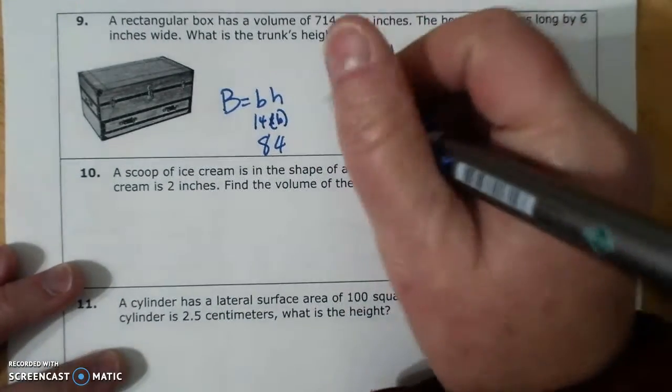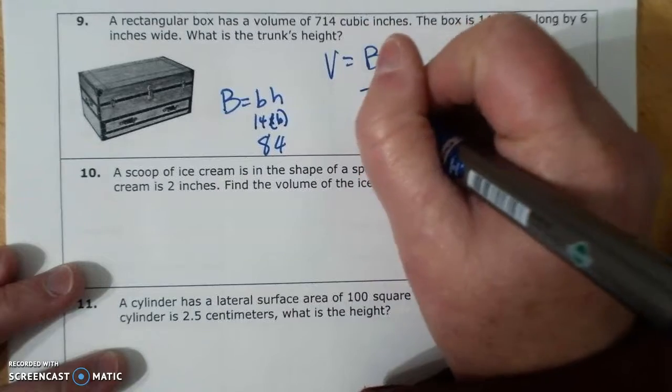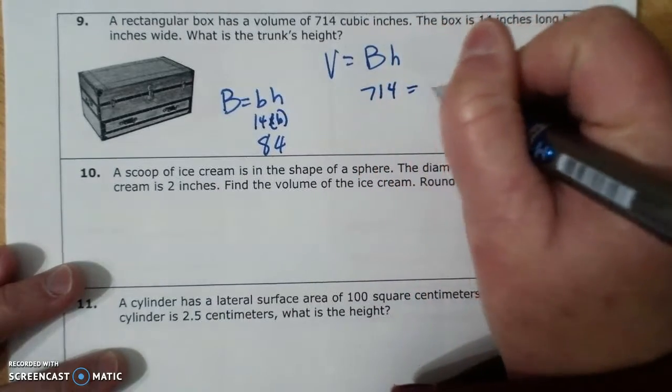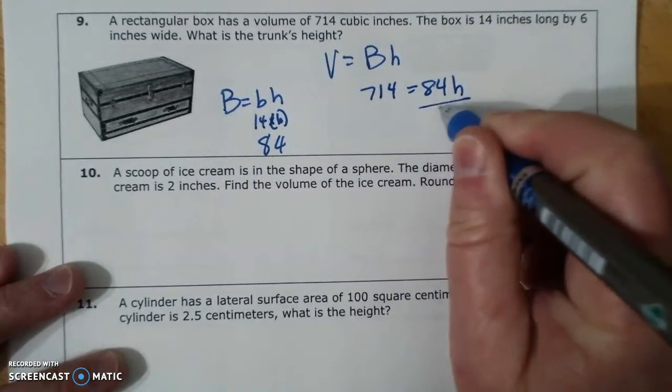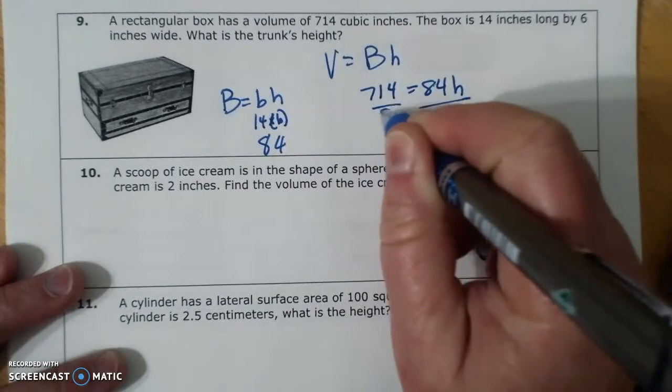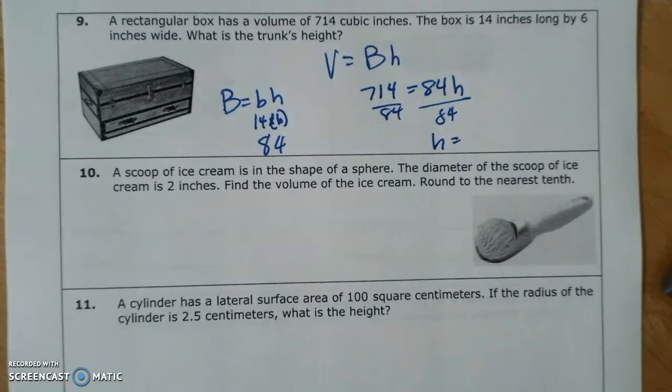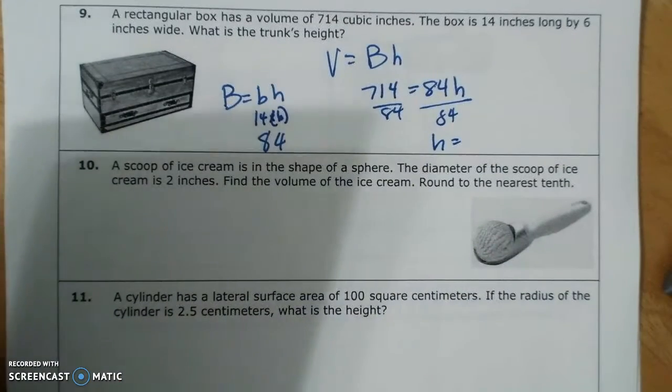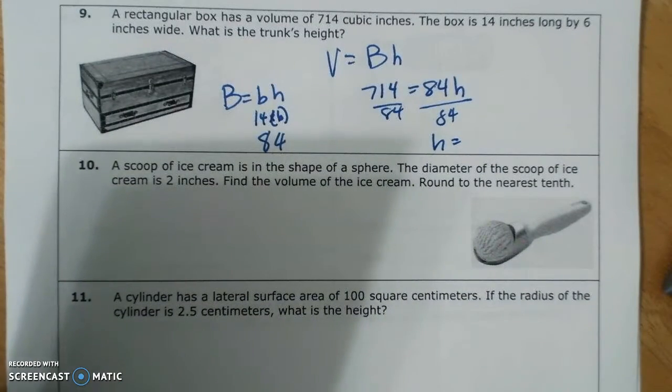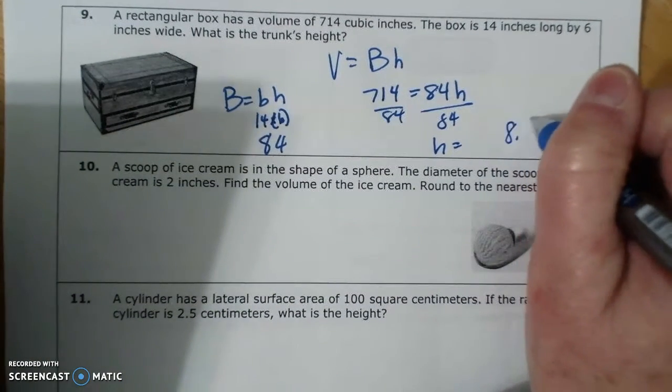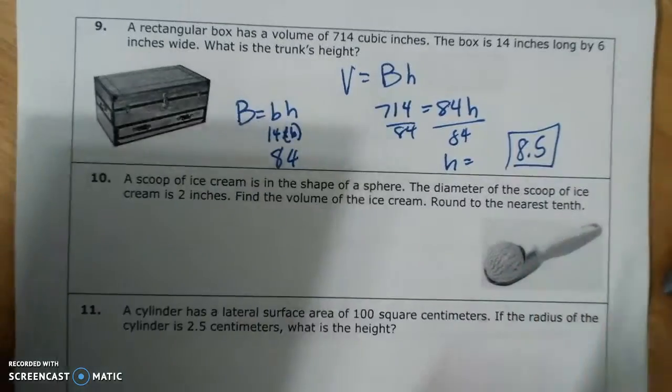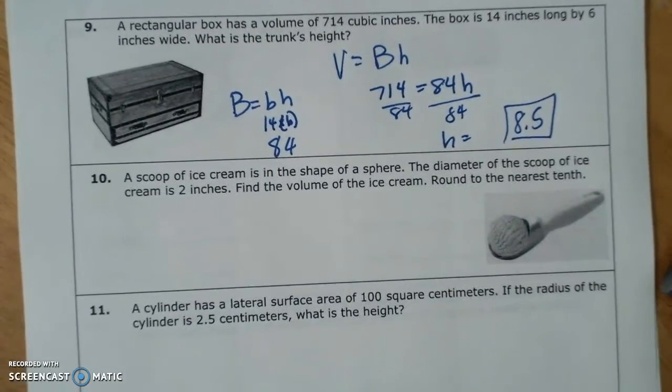And then I have, so this is the big B, so I have 714 equals 84 times H. Divide both sides by 84, and I get H equals 8.5. And that would be inches.